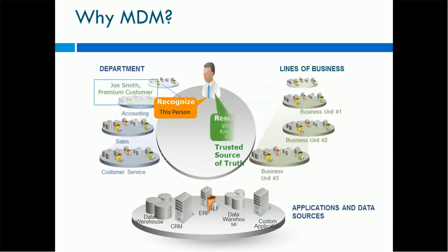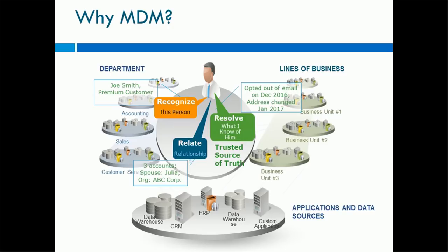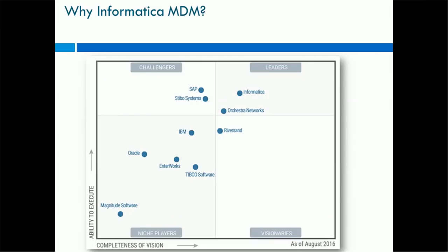For example, a customer Joe Smith is a premium customer maintained in one system. Another system maintains when Joe Smith opted for email — in this example, December 2016 — and that he opted out and his address changed in January 2017. There is also a relationship between Joe Smith and another customer Julia, and Joe Smith holds three accounts belonging to ABC Corp. All this information is maintained at different locations, and to have a single 360-degree view of a customer, you need to get all that information in one place — that is the need for MDM.